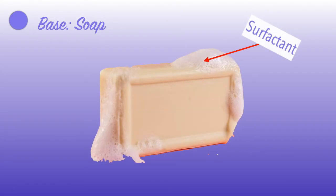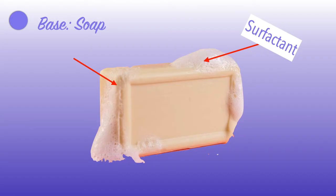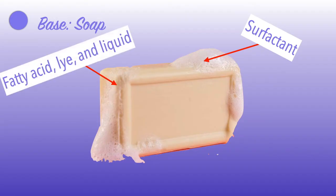Soap is a base and also a surfactant — meaning that it has the ability to attach to both oils and water. When you grab a bar of soap, it gets slippery when reacting to water. Ever wonder what soap is made out of? It's made out of fat or fatty acids. You're rubbing lard when scrubbing with soap.